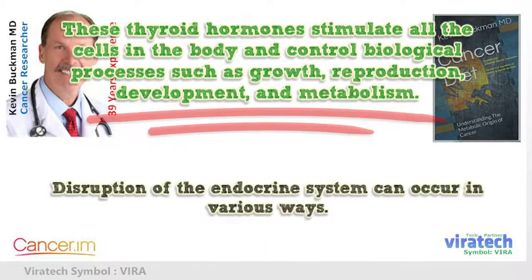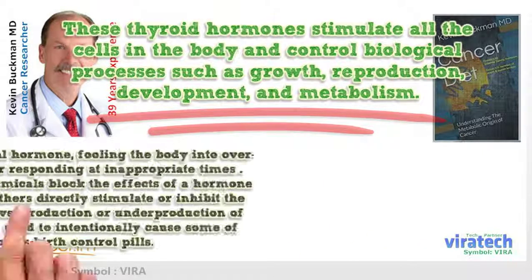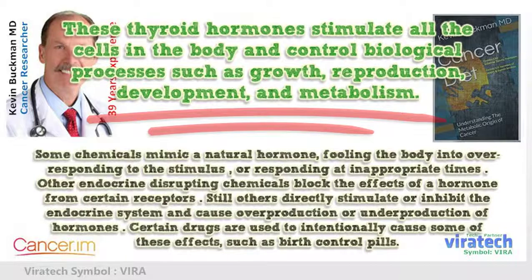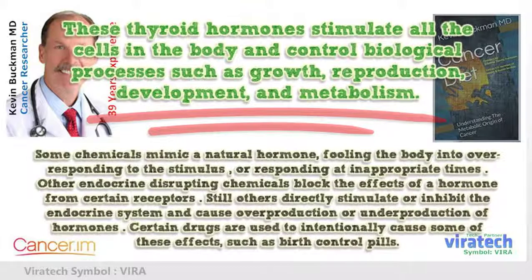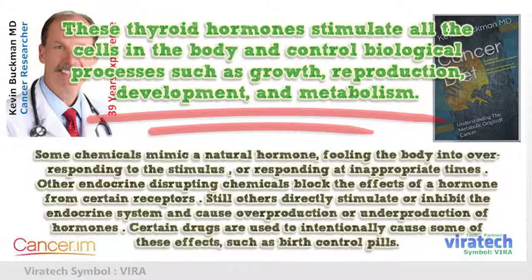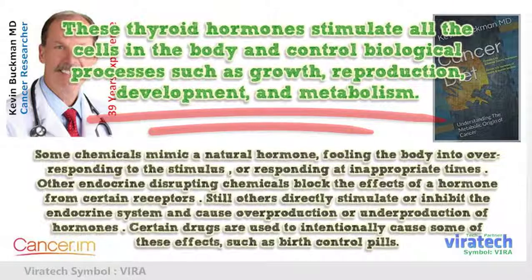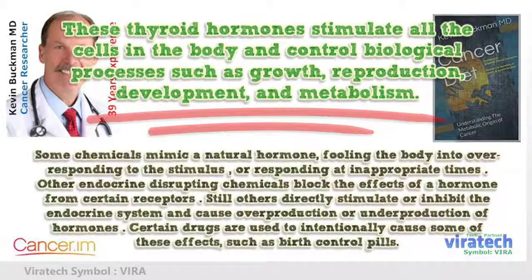Disruption of the endocrine system can occur in various ways. Some chemicals mimic a natural hormone, fooling the body into over-responding to the stimulus, or responding at inappropriate times. Other endocrine disrupting chemicals block the effects of a hormone from certain receptors. Still others directly stimulate or inhibit the endocrine system, causing over-production or under-production of hormones. Certain drugs are used to intentionally cause some of these effects, such as birth control pills.